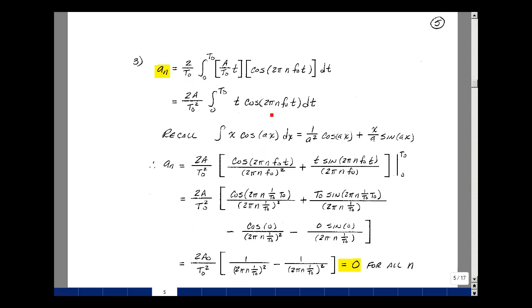So then a sub n is equal to 2a over t0 squared. Then we have the cosine of ax divided by a squared plus x divided by a times the sine of ax. And we're going to evaluate that from the upper limit minus the lower limit. Plugging in t equals t0, then I have a t0 here, a t0 here, and a t0 here. Let me also write f0 as 1 over t0. We get some cancellation.